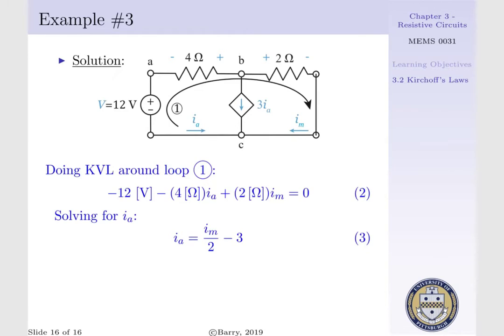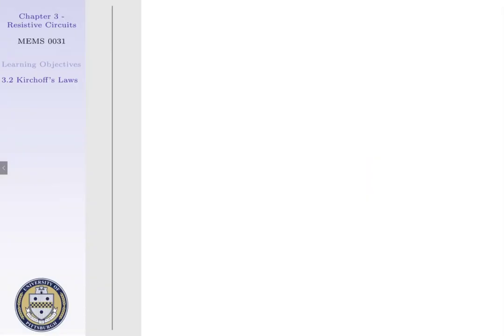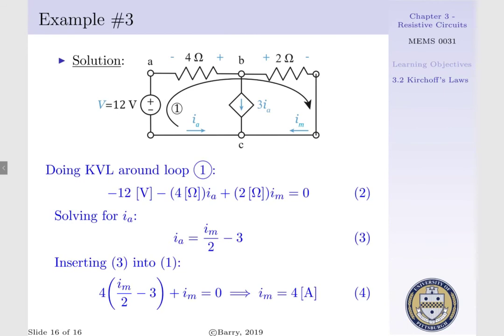Now we have two equations and two unknowns. If we substitute this expression for IA back into our first equation, we'd have 4 times (IM per 2 minus 3), plus IM equals 0. Or IM equals 4 amps, the current measured by our ammeter.